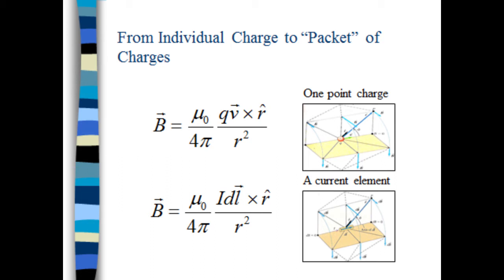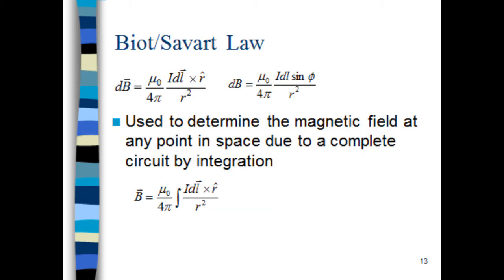Biot-Savart tells us the magnetic field of a current element. In order to get the magnetic field of various geometries, we need to integrate those elements. Next, I'm going to go through examples of how we might do that using Biot-Savart.